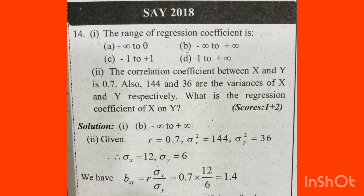We have to write a question. The range of regression coefficient is dash. Regression coefficient — the range is minus infinity to plus infinity. The correlation coefficient between x and y is 0.7, and 144 and 36 are the variances of x and y respectively.